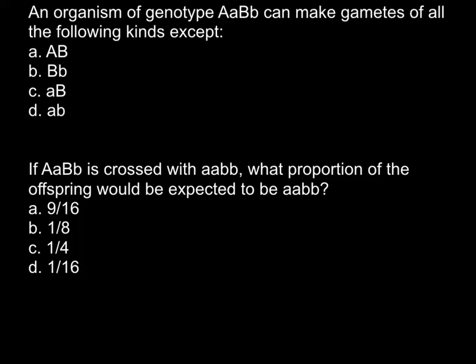An organism of the genotype that is heterozygous for gene A and heterozygous for gene B can make gametes of all of the following kinds except — and here are four answers that you may choose from. And here is my explanation.